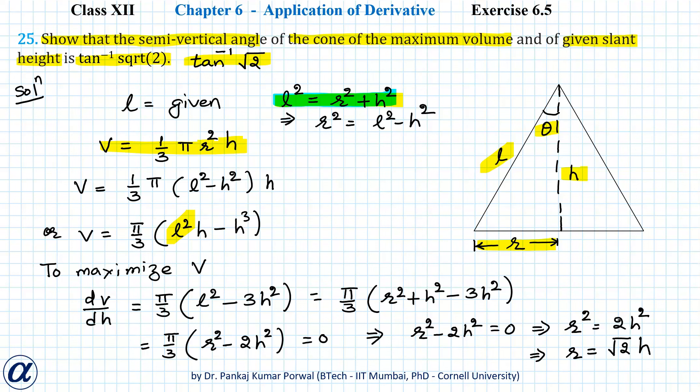of this equation because r and h both are lengths and will be positive, not negative. Now we have to check whether we have maximum or minimum for this value of r, and for that we'll have to find the second derivative.